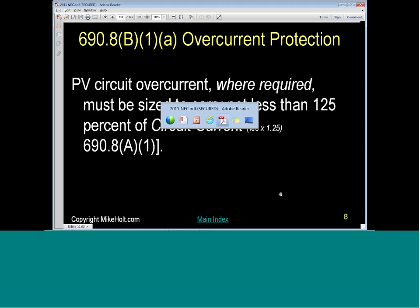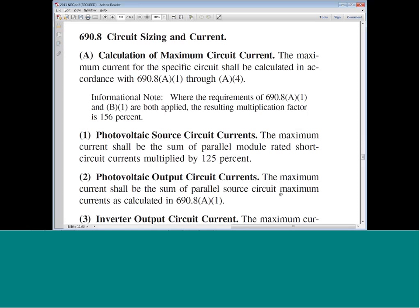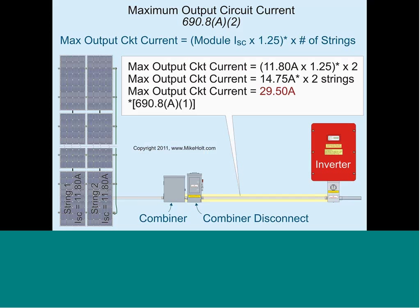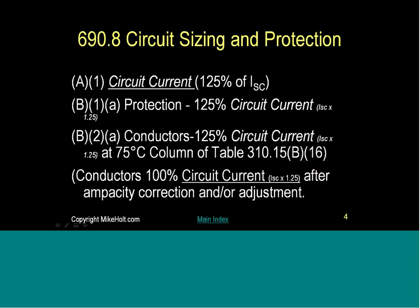Here's the code: 690.8A says the maximum current shall be calculated per A1 through A4. A1 states that the maximum current shall be the sum of the parallel modules' rated short circuit current times 1.25. So that's where we took the short circuit current times 1.25. Now let's go to the overcurrent device — 690.8 B1. The current we use for calculations is the short circuit current times 1.25.